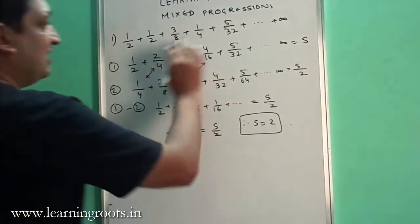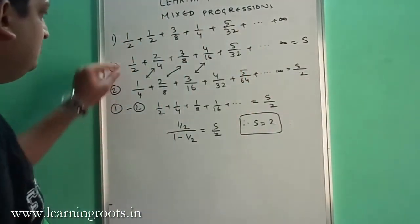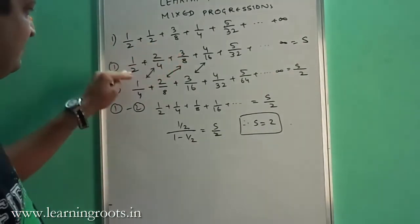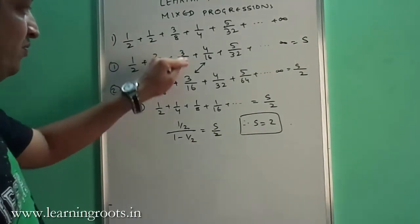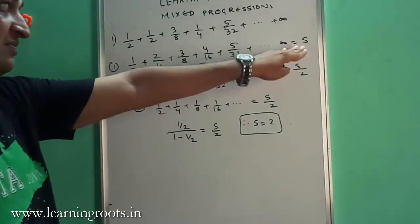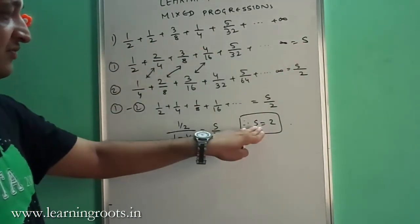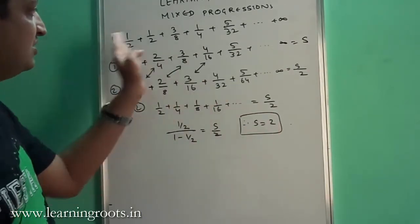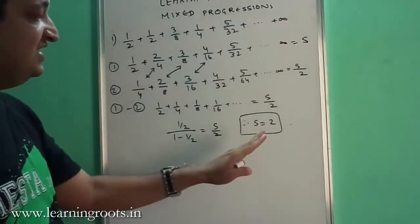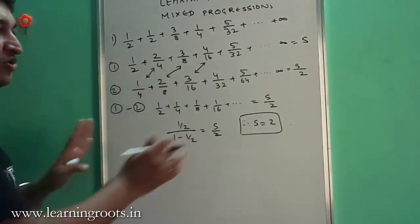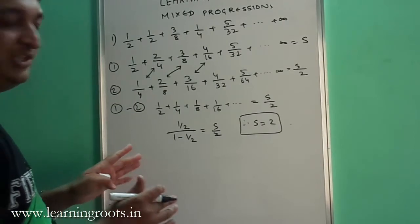So that's what you started with — 1/2 plus 2/4 plus 3/8 plus 4/16 and so on equaling S — and you have found that S equals 2. So the sum of this entire series is equal to 2. That's how you go about solving these kinds of questions.